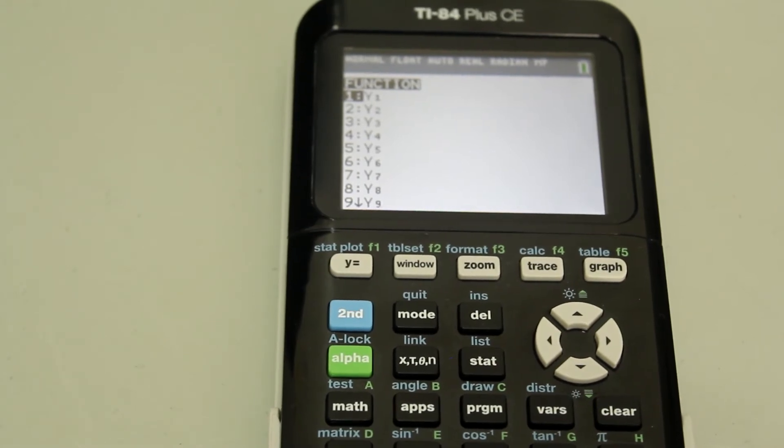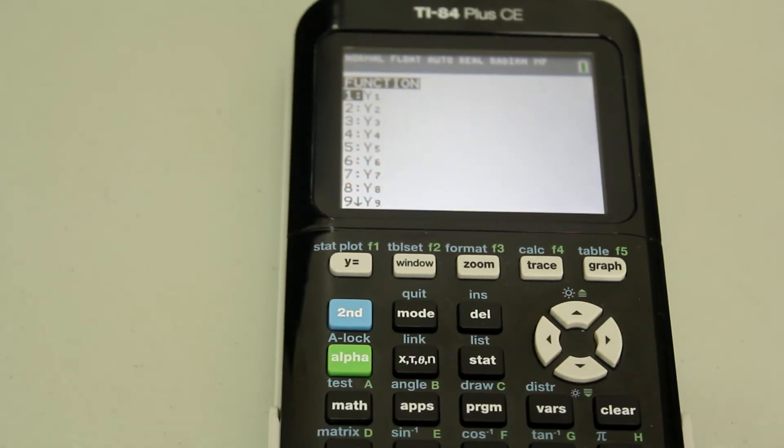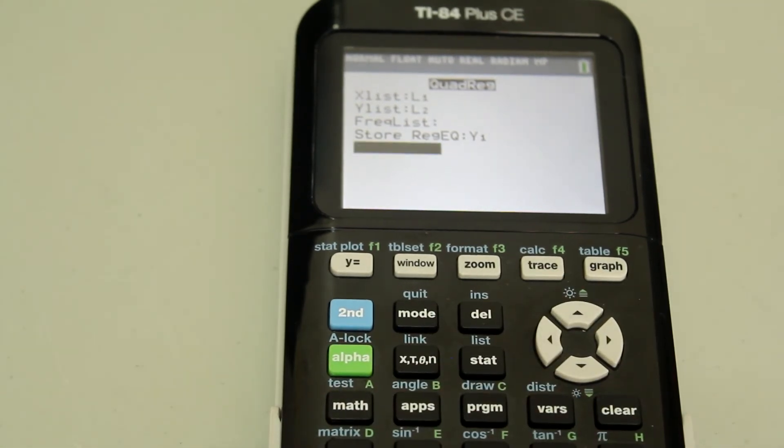And now I want my Y1 as the equation for the regression. So I'm just going to select Y1 using number one or just enter. And now down arrow to calculate and hit enter.